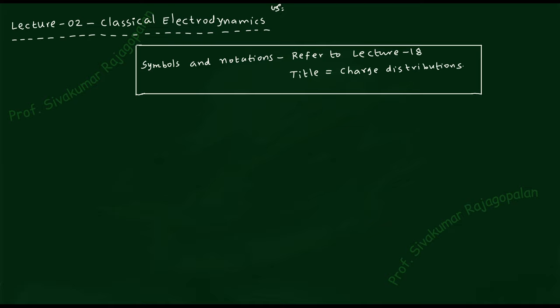To start today's work, you will need to refresh the symbols and notation used for writing Coulomb's law. This is already explained in the first course on electromagnetism. If you studied Griffiths for your BSc, you will be able to understand the notation — such as charge density, charge distribution, discrete and continuous charges — and expressing Coulomb's law in vector and integral form.